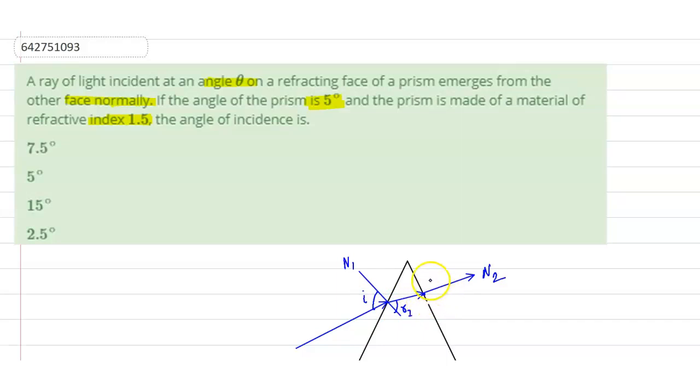And this angle, the emergent angle, is equal to zero because it's directly at the angle of our normal. Let's write down what is the angle of the prism. The angle of the prism is 5 degrees.